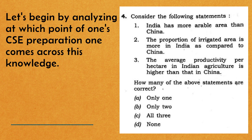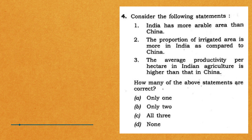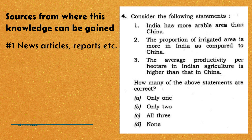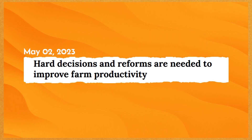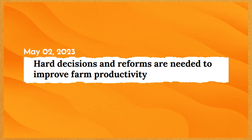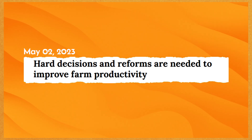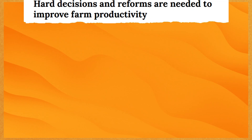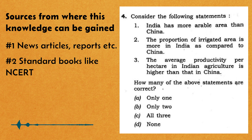Ab sabse pehle ye dekhte hain ki aapki preparation ke doran, aapko kahan par sabse pehle is question se related knowledge milegi. Ab is question se related knowledge aapko kaafi jagah par mil sakti hai, par un sources mein do major sources ki baat karen toh, pehla source hai news articles, jahan par frequently India ki low agricultural productivity ki baat ki jaati hai, for instance jab India ki fertilizers import dependency par news mein baat ho.